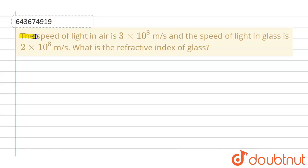this question: The speed of light in air is 3 × 10⁸ m/s, and the speed of light in glass is 2 × 10⁸ m/s. What is the refractive index of glass?